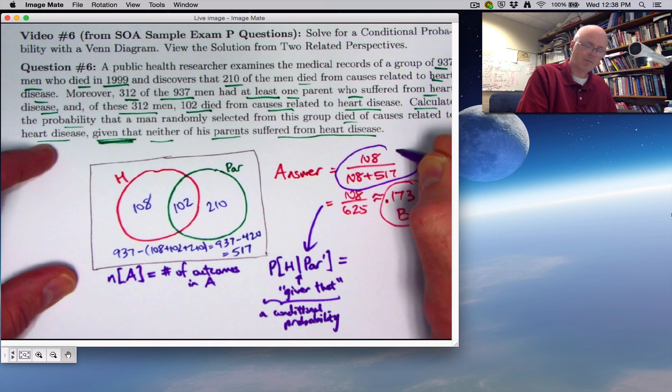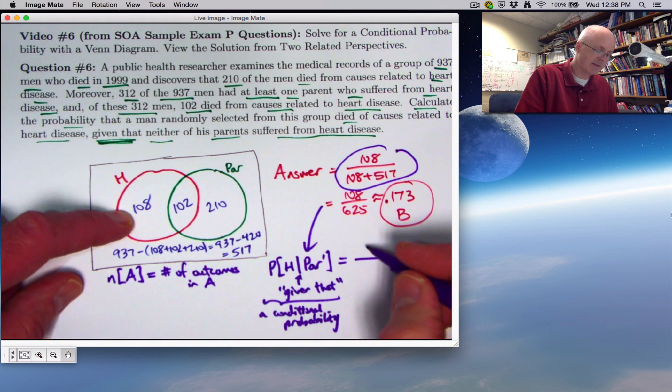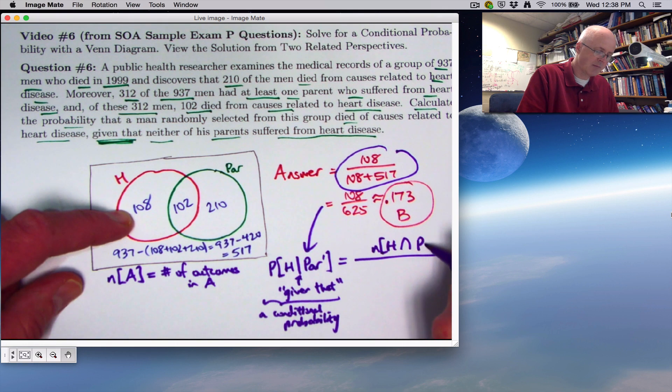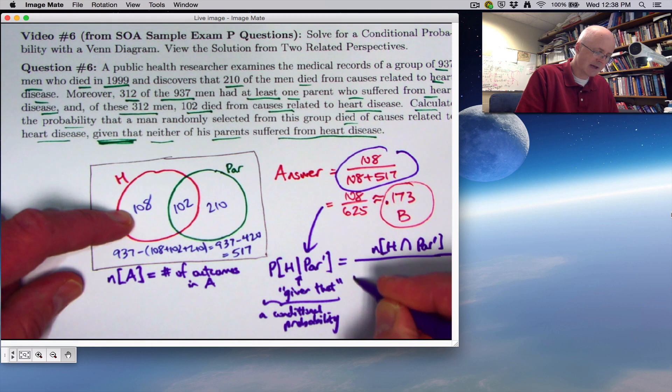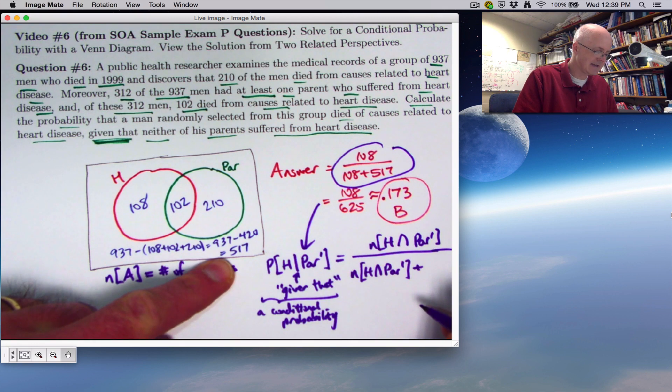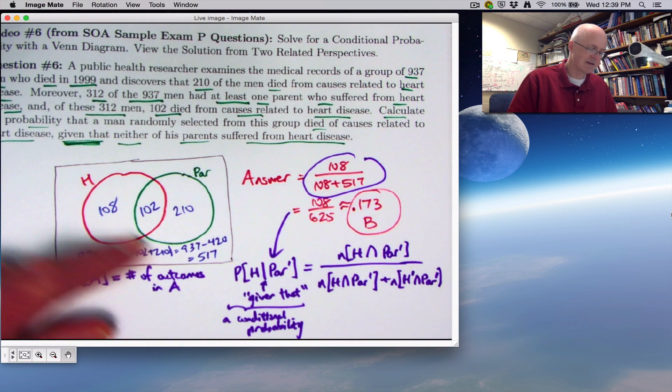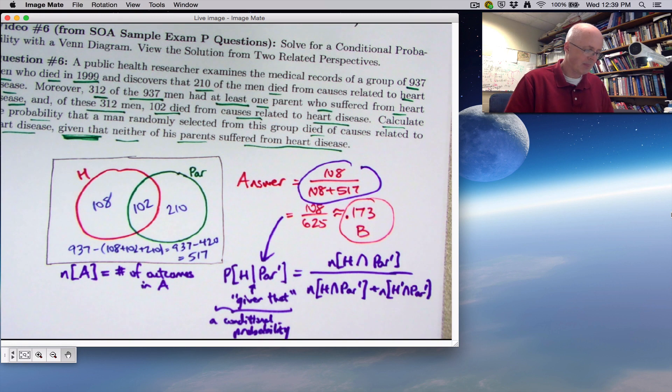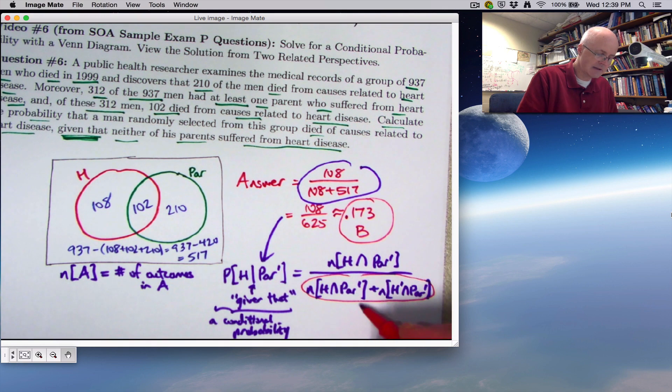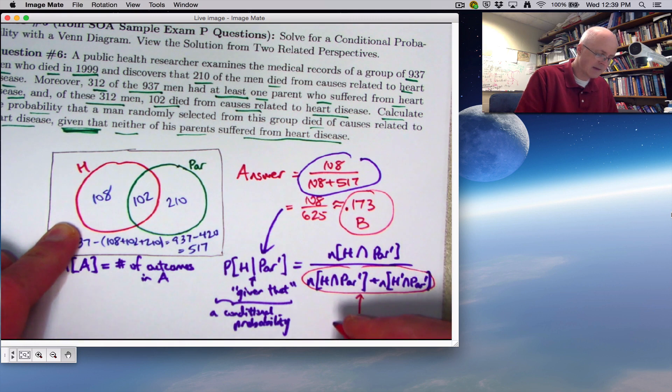What about these numbers using the n notation? 108 is the number in this crescent. That's n of H intersect PAR prime. The same number 108 appears in the numerator. The 517 is outside of both H and PAR. It's in H prime intersect PAR prime. So that's a symbolic way of representing what I did. Another way to write this is to change the bottom to realize that sum, kind of like the special addition rule for disjoint events, is also the number of men outside of PAR. That's n of PAR prime.